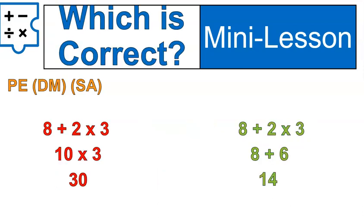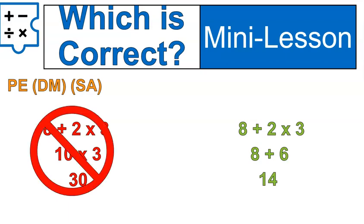Going back to that original question, I showed two different ways of doing 8 plus 2 times 3. I want you to look at the screen and pick which one you think is correct now based on everything we've talked about. The green answer is the correct one — multiplication gets done before addition because that's the correct order of operations.